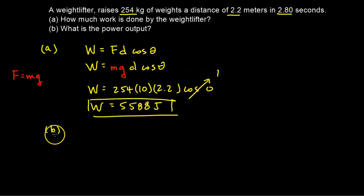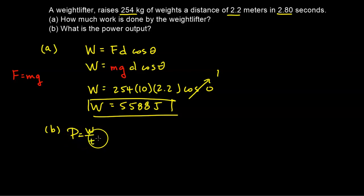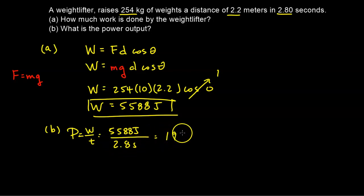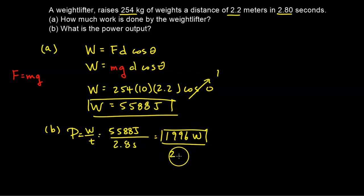For part B, what is the power output? Power equals work divided by time. The work is 5,588 joules divided by 2.8 seconds, giving us 1,996 watts. We could also round and write this in scientific notation as 2.0 × 10³ watts.